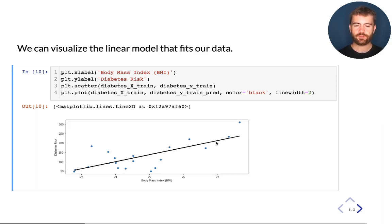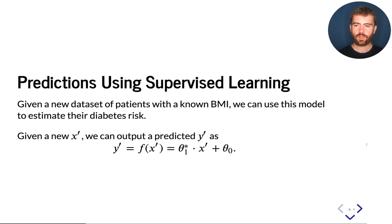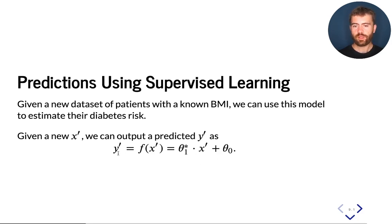Intuitively, if we were to guess the diabetes risk given the data in a certain region, we would probably guess something around 200 as opposed to around 100. So this model does provide an intuitively valid estimate of diabetes risk. Since we have a predictive model, we can use it to make predictions. For example, if we have a new data point — a new patient x' for which we know the BMI — we can plug this x' into our predictive model with known slope and intercept, and this will give us an output y', our estimate of diabetes risk for this new patient.